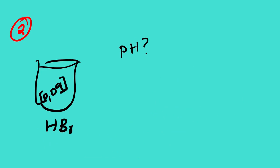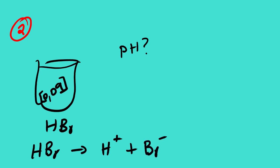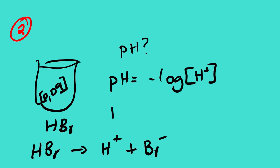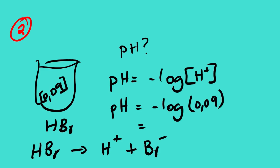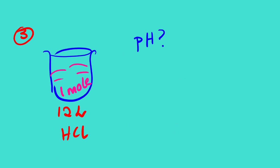Example two: we are given the concentration of hydrobromic acid (HBr) as 0.09 mol/L. You can pause the video and work out this question. HBr is also a strong acid, so from the dissociation we look at the molar ratio. pH = −log(0.09) = 1.05.